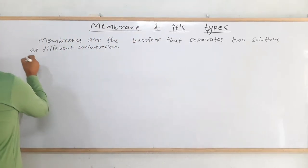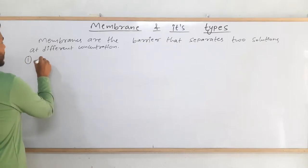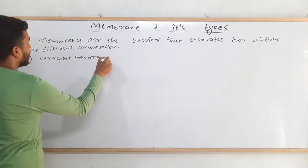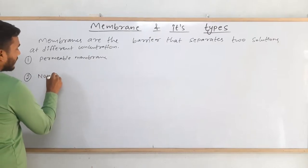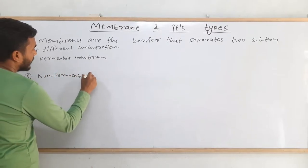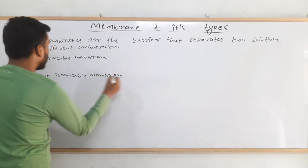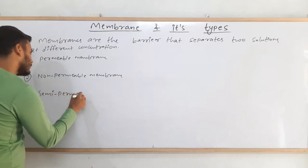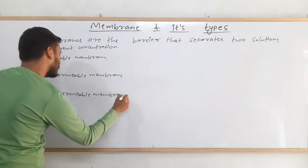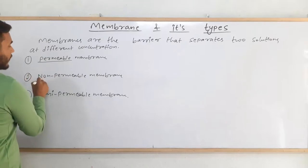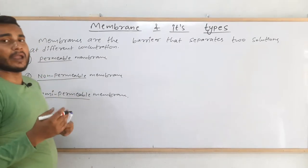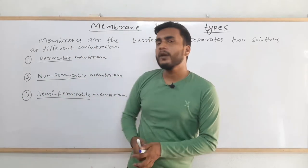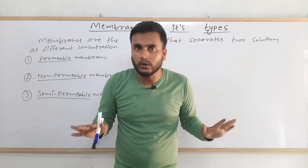There are three types of membranes. The first one is permeable membrane, the second one is non-permeable membrane, and the third one is semi-permeable membrane. The permeable word comes from permission. So, a permeable membrane will allow everything to pass through it, a non-permeable membrane will allow nothing to pass through it, and a semi-permeable membrane will allow some things to pass through it but not others.